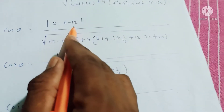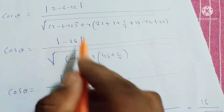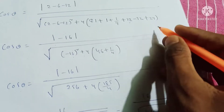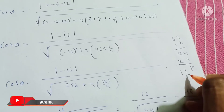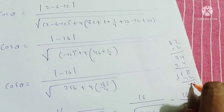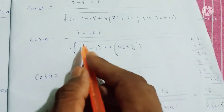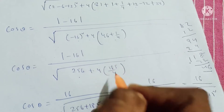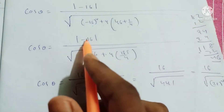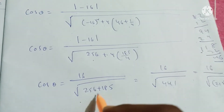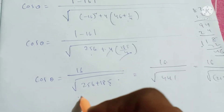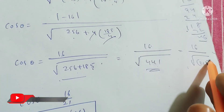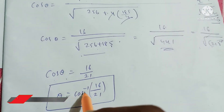cos theta equals (2 minus 6 minus 12) equals minus 16 by root over: minus 16 whole squared plus 4 times (81 plus 1 plus 1 by 4 plus 12 minus 72 plus 24). This simplifies to 256 plus 4 times 185 by 4, giving root over 256 plus 185 equals root over 441 equals 21. Therefore cos theta equals 16 by 21, so theta equals cos inverse of 16 by 21.